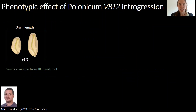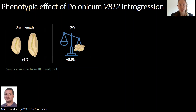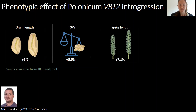Over six environments, we found that introgression of Triticum polonicum VRT2 increases grain length by five percent, which also translates to an increase in thousand grain weight. However, it also affects spike length and plant height.